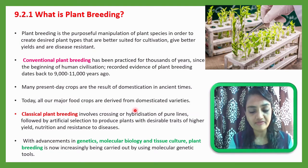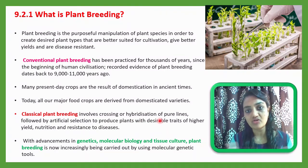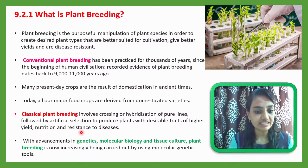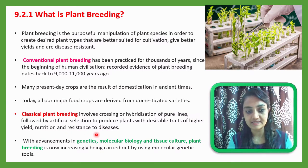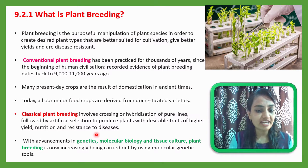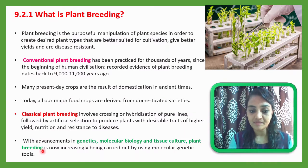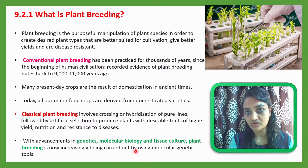Classical plant breeding involves crossing or hybridization of a pure line — that is, a homozygous dominant line — followed by artificial selection to produce plants with desirable traits, higher yield, better nutrition, and resistance to disease. With advancements in genetics, molecular biology, and tissue culture, plant breeding methods are increasingly being carried out using molecular genetic tools.